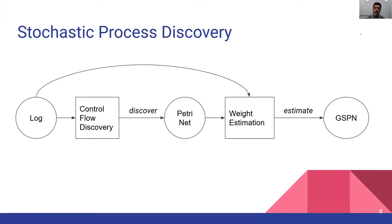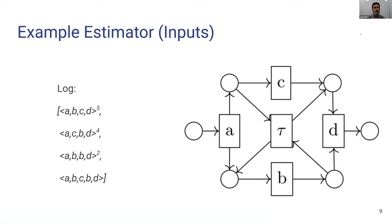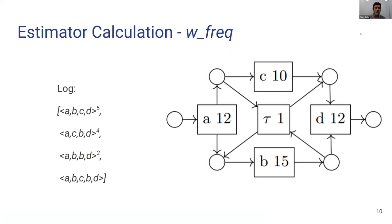The approach builds on existing successes of control-flow discovery algorithms and transforms the result into a stochastic process model informed by both the control-flow model and the log. The control-flow model is in the form of a Petri net; we go through an estimation process and output a Generalized Stochastic Petri Net (GSPN), a well-established mathematical formalism representing processes where probability is a key aspect, with applications from biology to operations research. One straightforward estimator simply lifts activity frequencies into the process model with defaulting around silent transitions — called the frequency estimator.